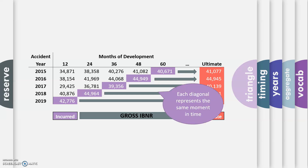Each diagonal in the triangle represents the same moment in time. The purple squares represent December 31st, 2019. On December 31st, 2020, we would be able to add another diagonal to this triangle because we would have 12 months of additional information for each of the accident years.